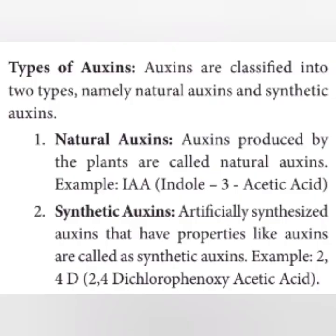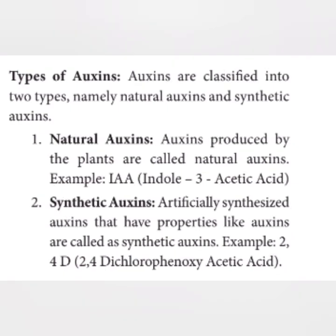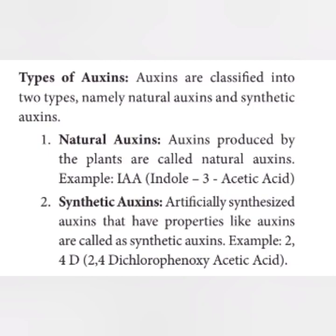The first question is: what are synthetic auxins? Give examples. Artificially synthesized auxins that have properties like auxin are called synthetic auxins. It is one type of auxin. For example, 2,4-D, that is dichlorophenoxyacetic acid.